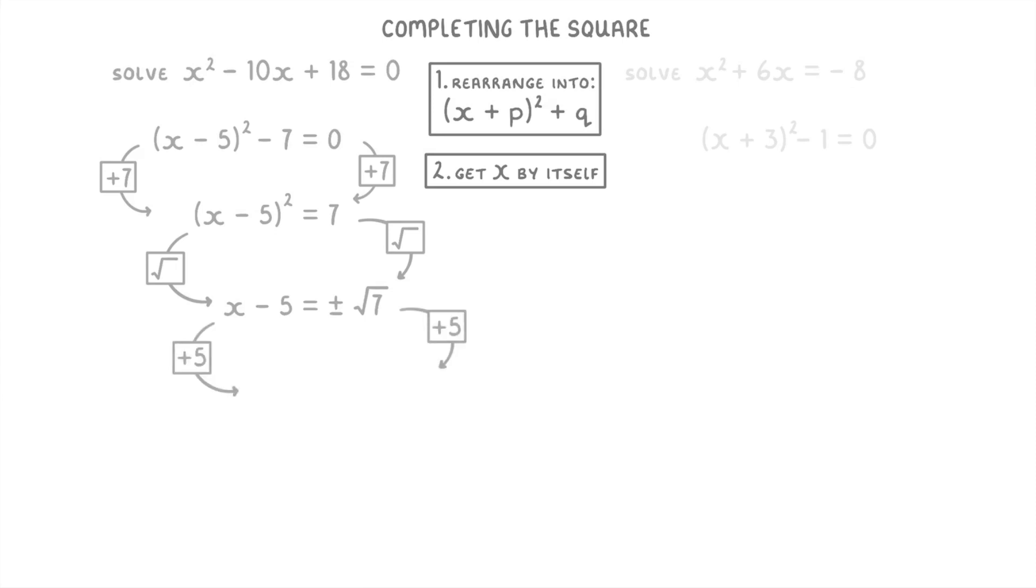And lastly, we need to add 5 to both sides to get x equals plus or minus root 7 plus 5. So really, we have two solutions for x. Either x equals positive root 7 plus 5, or x equals negative root 7 plus 5.